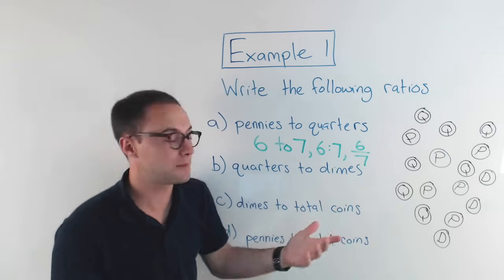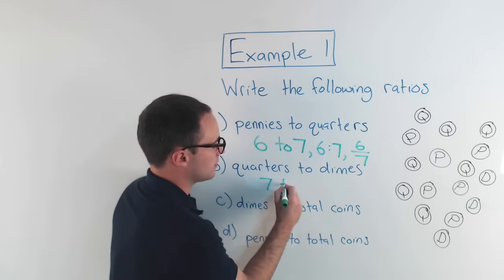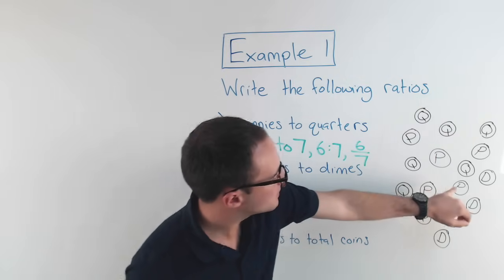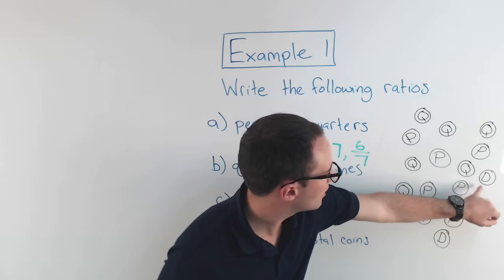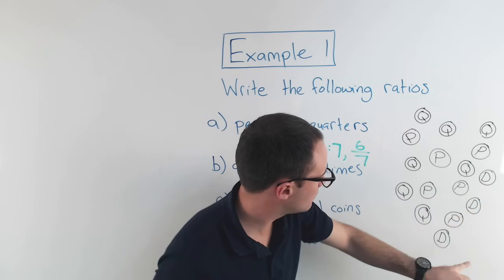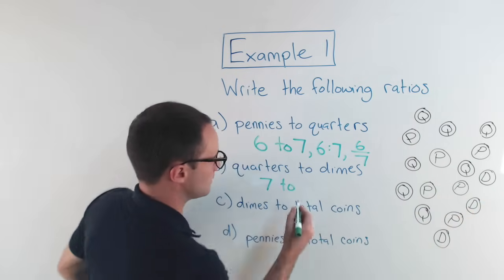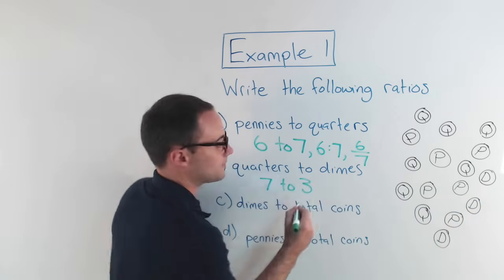So for dimes — D right here — one, two, three. Seven to three.